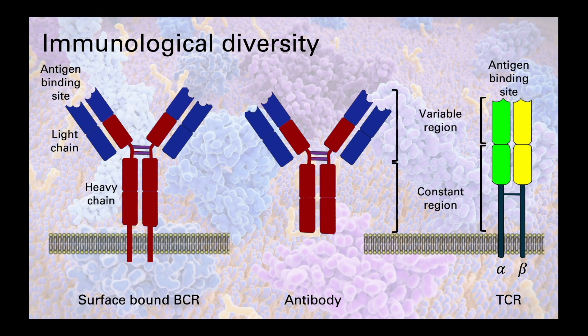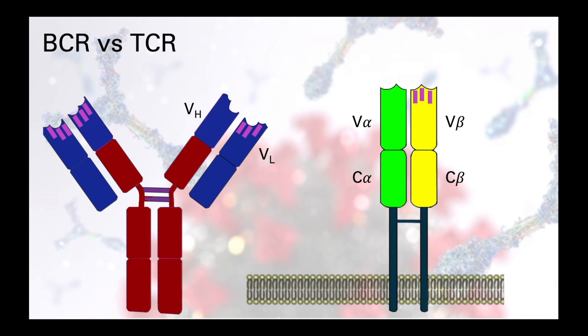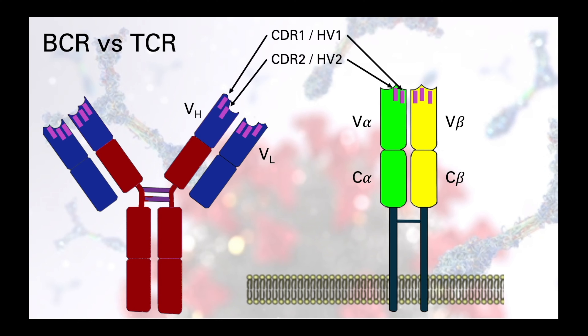The diversity we see in these molecules is generated by the random rearrangement of specific gene segments that we inherit from our biological parents. This reordering of DNA only occurs for antibodies and T cell receptors, focusing on the antigen binding site at the end of the molecules. That diversity is due to the amino acid sequence in the hypervariable or complementarity determinant regions of the variable domains, and each domain that makes up the binding sites for the antigen has three of these hypervariable domains separated by less variable framework regions.